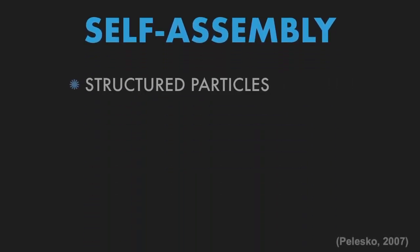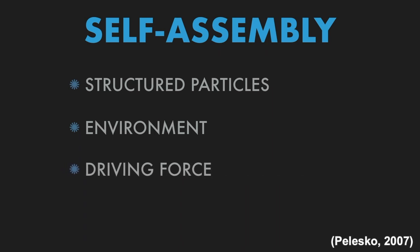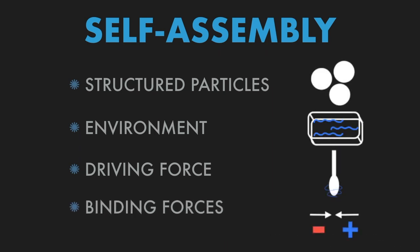There are four main components which allow self-assembly to occur. Structured particles, which often determine the final structure of the system. The environment, which is the surrounding or container which the self-assembly occurs in. The driving force, which can be thought of as the antagonist that triggers the assembly. And the binding force, which holds the particles together in their ordered structure.